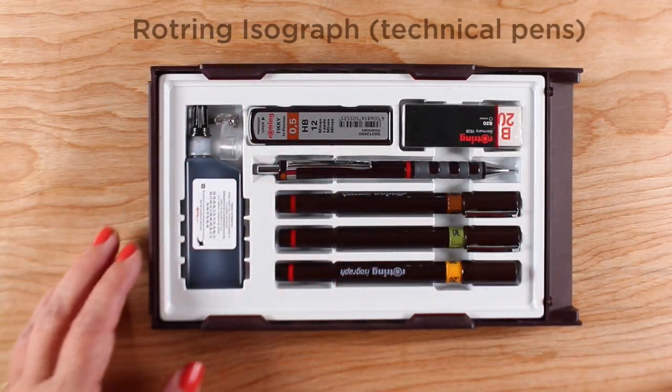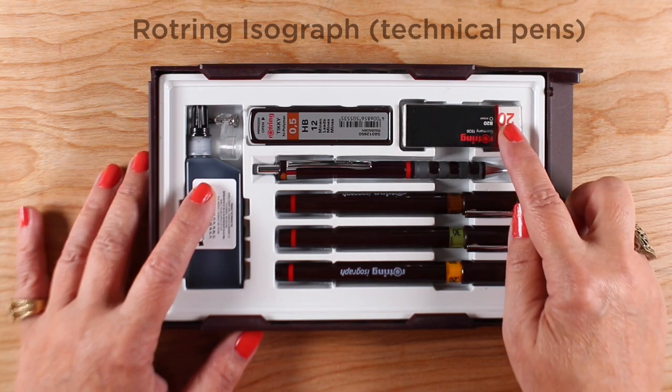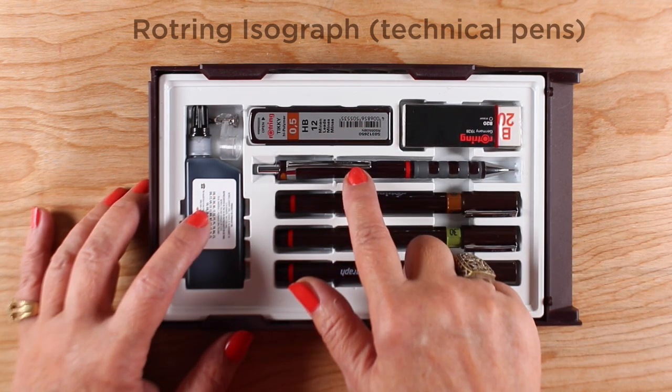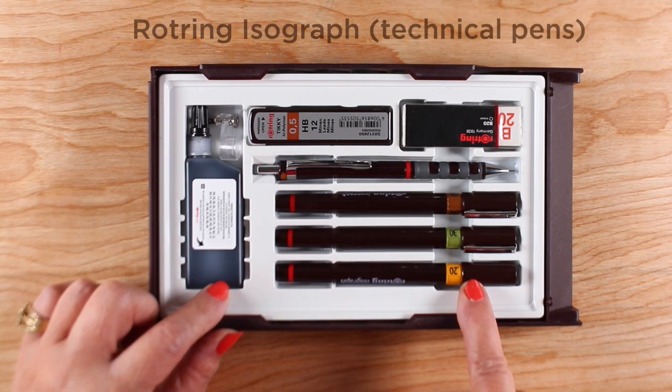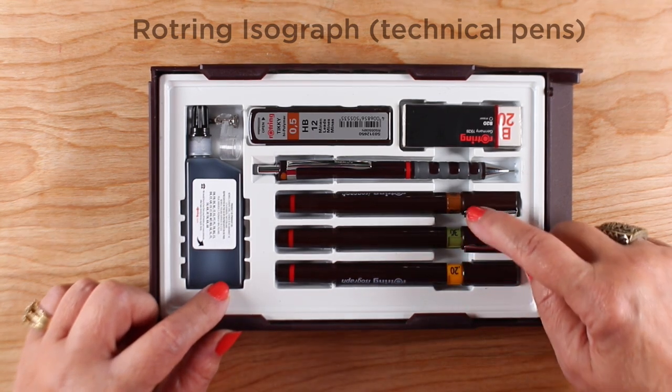Rotring Isograph. I used to have technical pens when I was in college and I haven't had them since then. This set comes with a pencil that has leads and an eraser with it and three of the technical pens and a bottle of ink.